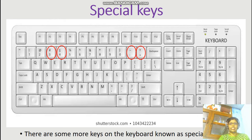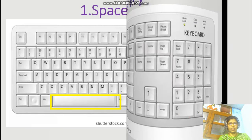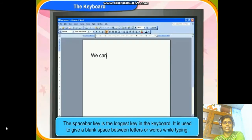The next type of key is special keys. Special keys have different symbols on them like plus, minus, dollar, and hash. Now, the first special key is the spacebar key. As you can see, a yellow color box boundary is shown here — this is called the spacebar. Spacebar is the longest key on the keyboard. It is used to give space between the text. As you can see, 'we' and 'can' have a space between the letters, and this is done through the spacebar key.